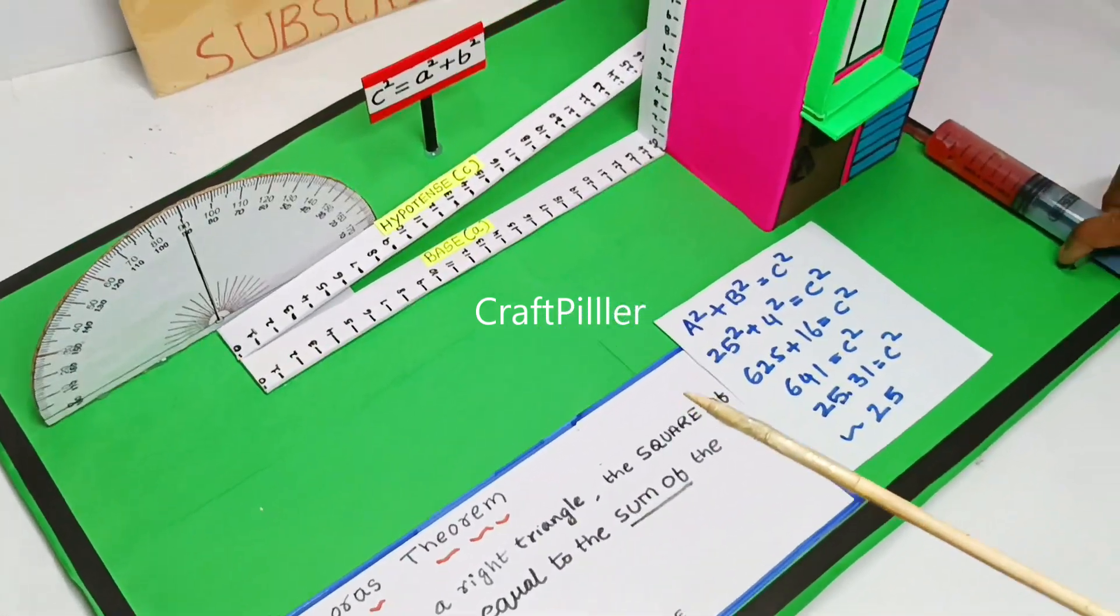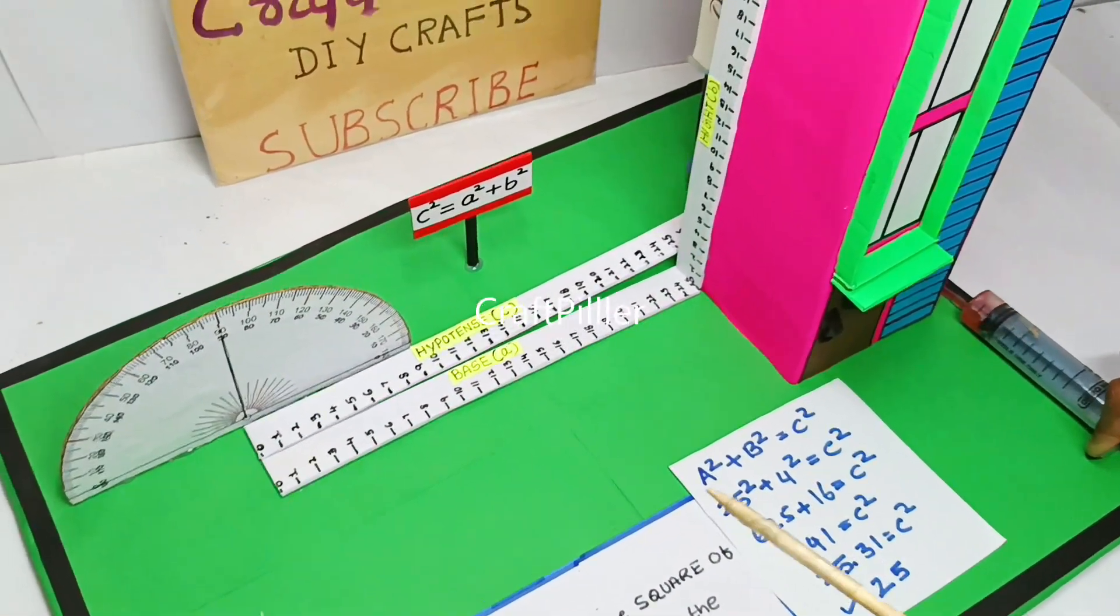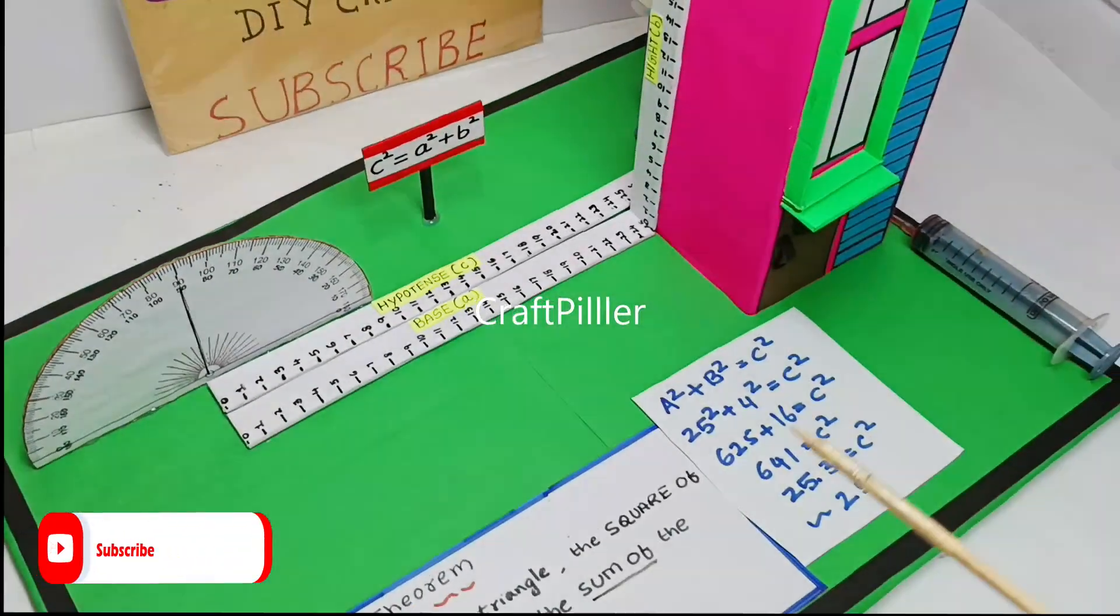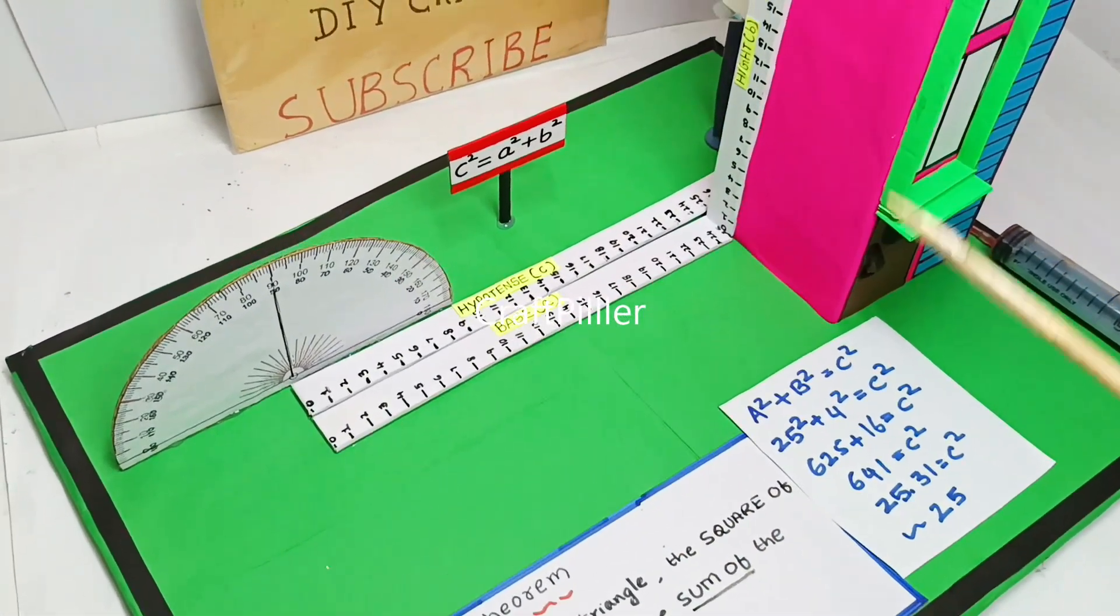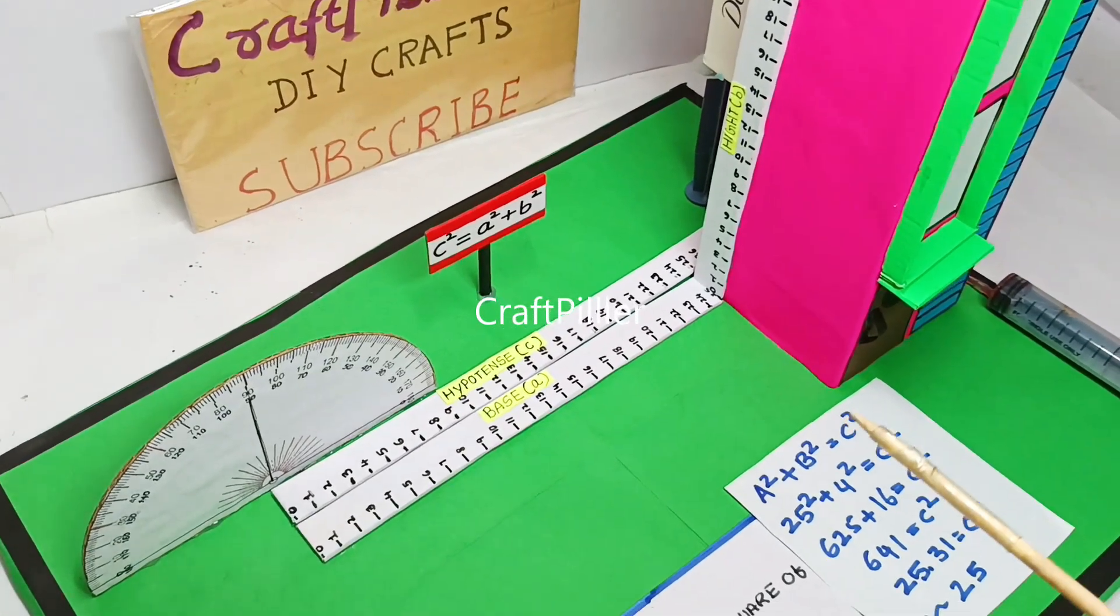I hope you guys got a clear idea now on how to explain this Pythagoras theorem in your math exhibition, as well as how to demonstrate it in your exhibition.